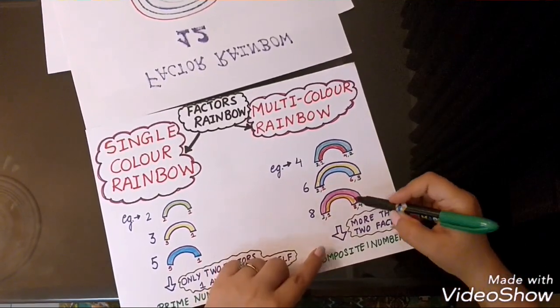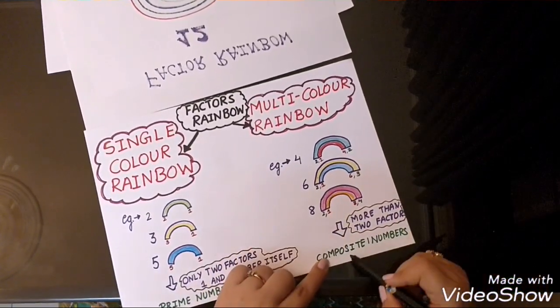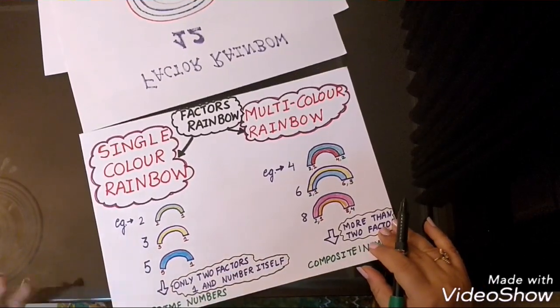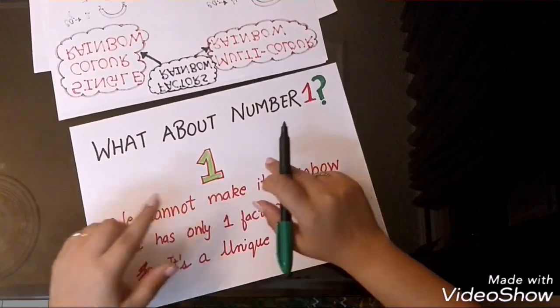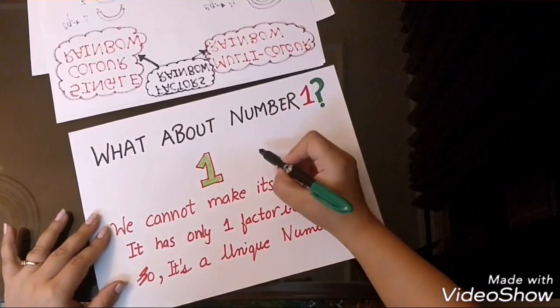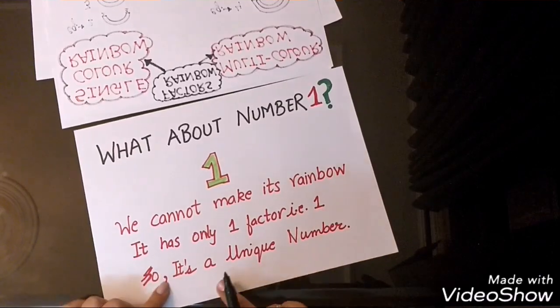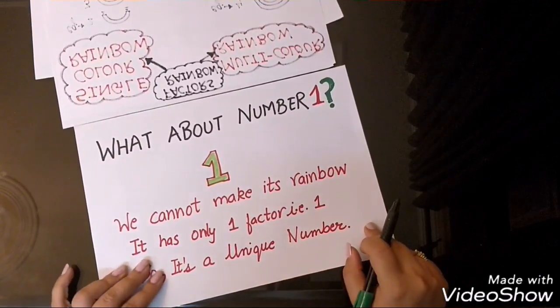So, when a number has more than 2 factors, then the numbers become composite numbers. Now, what about 1? The number 1. We cannot make its rainbow because it has only 1 factor 1. That's why we call 1 as a unique number.